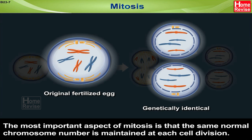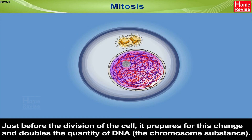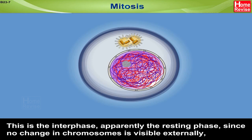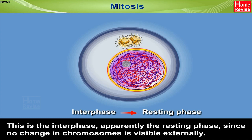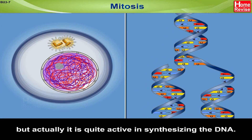The most important aspect of mitosis is that the same normal chromosome number is maintained at each cell division. Just before the division of the cell, it prepares for this change and doubles the quantity of DNA, that is the chromosome substance. This is the interphase as seen in the figure — apparently the resting phase, since no change in chromosomes is visible externally, but actually it is quite active in synthesizing the DNA.